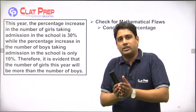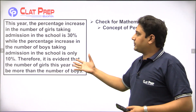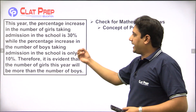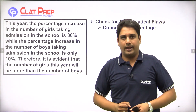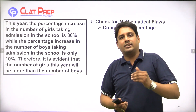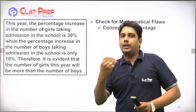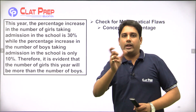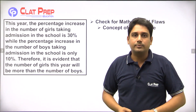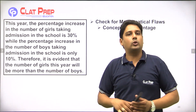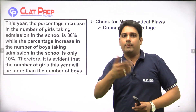Think about this. The percentage increase for girls is 30% and for boys is 10%. Let's say last year there were 300 girls in the school — a 30% increase gives 90 more, making 390 girls. And if there were 300 boys with a 10% increase, that gives 30 more, making 330 boys. In that scenario the number of girls is more than boys.